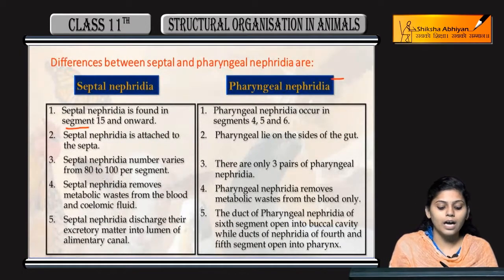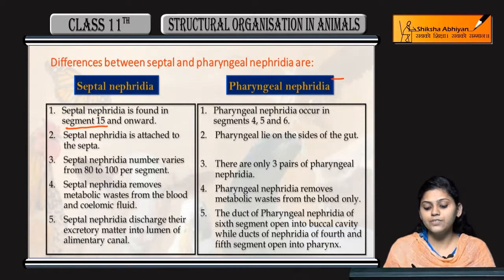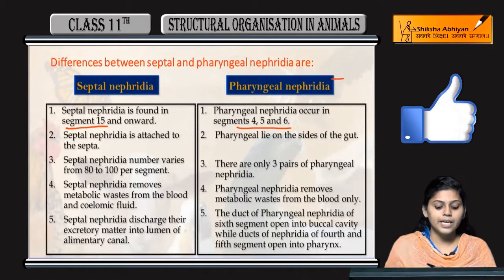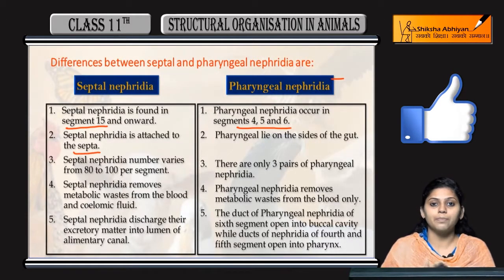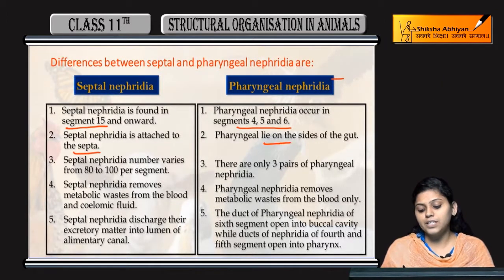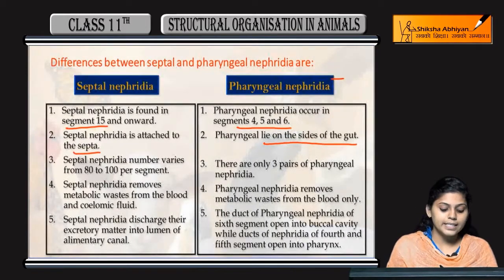Moving on to septal nephridia and pharyngeal nephridia: septal nephridia are found after segment 15, whereas pharyngeal nephridia are found in segments 4, 5, and 6 in pairs. Septal nephridia are attached to septa, whereas pharyngeal nephridia lie on the gut.